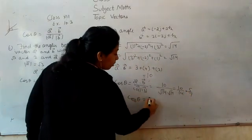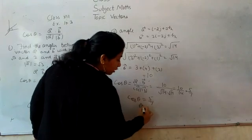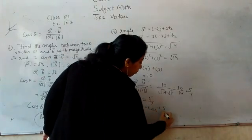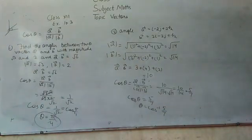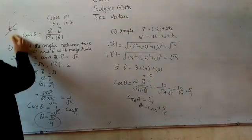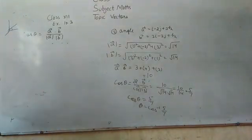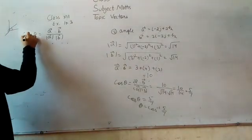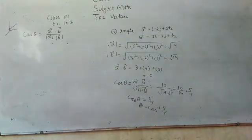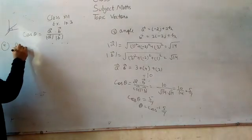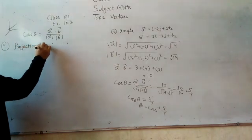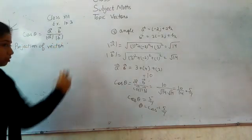Now, cos theta equals 5 by 7, so theta equals cos inverse 5 by 7. Cos inverse 5 by 7. This is the method for how we find out the angle between two vectors. Third question.